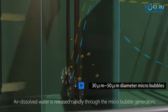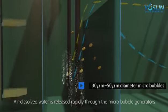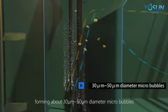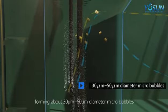Air dissolved water is released rapidly through the microbubble generators, forming about 30µ-50µ diameter microbubbles.